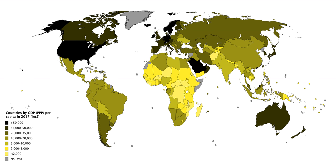These investments in empty corporate shells almost always pass through well-known tax havens. The eight major pass-through economies — the Netherlands, Luxembourg, Hong Kong SAR, the British Virgin Islands, Bermuda, the Cayman Islands, Ireland, and Singapore — host more than 85% of the world's investment in special-purpose entities, which are often set up for tax reasons.